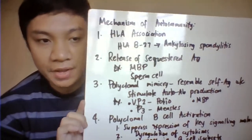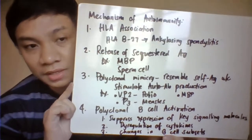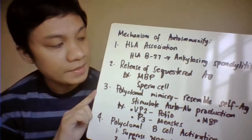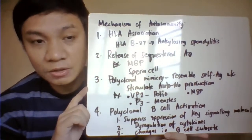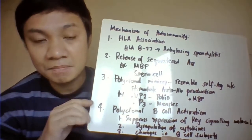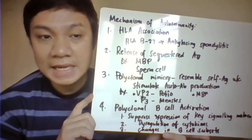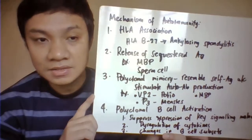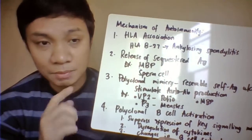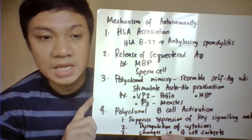The mechanisms leading to autoimmunity include: first, major histocompatibility complex or HLA association — for example, HLA-B27 is associated with a greater chance of developing ankylosing spondylitis. Second, the release of sequestered antigens into peripheral circulation. Sequestered antigens are normally confined to specific areas of the body and not found in peripheral circulation, so when they leak into circulation, they are recognized as foreign and the body produces antibodies against them.